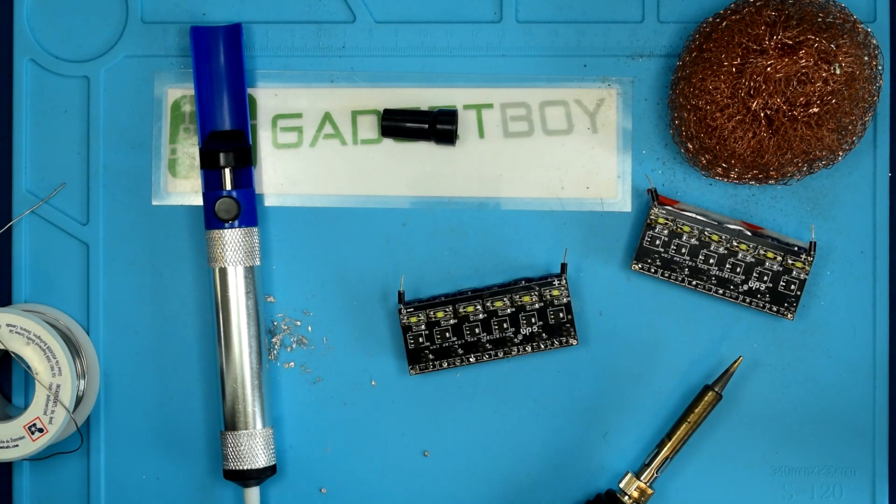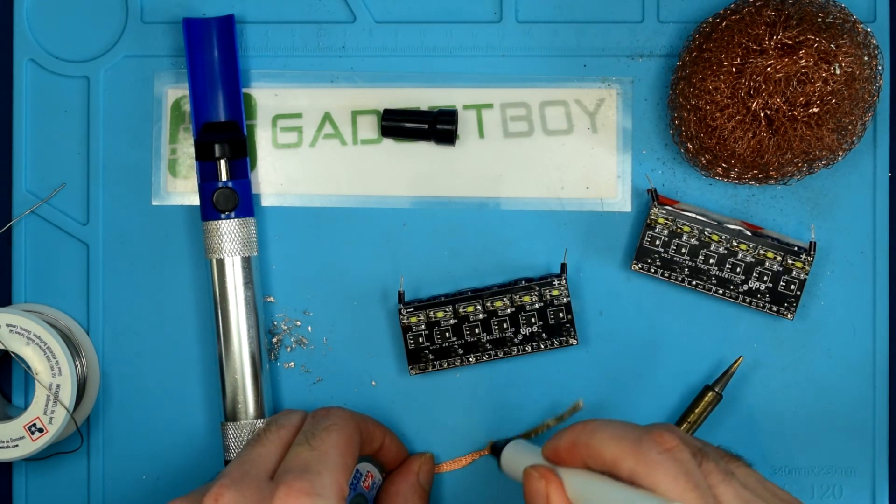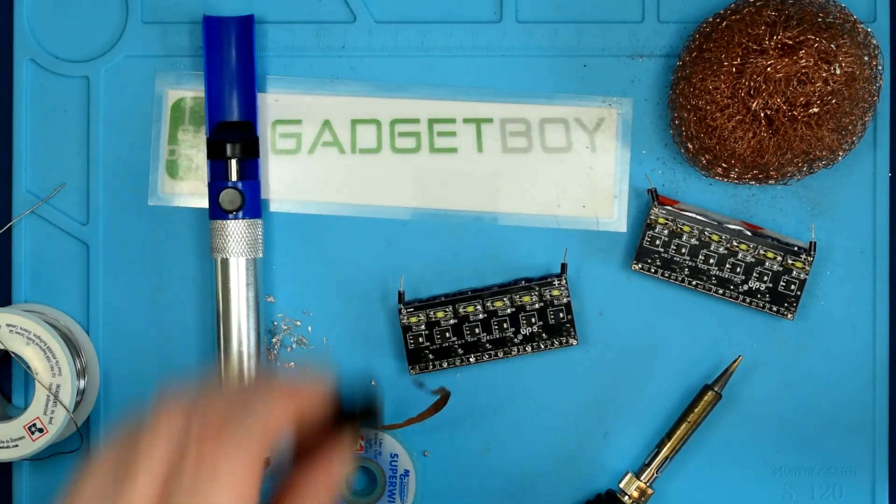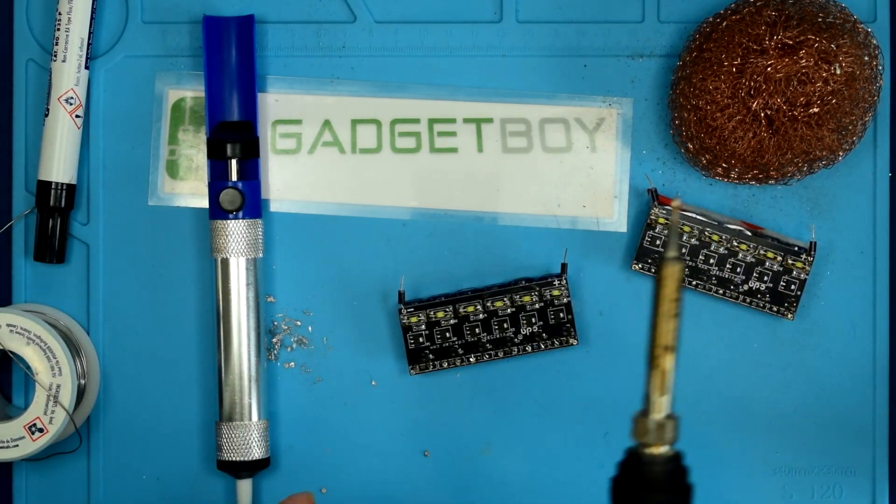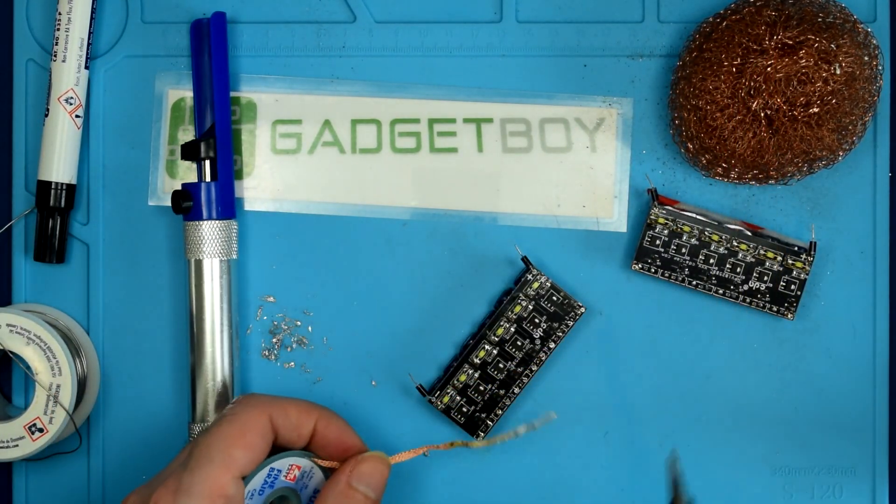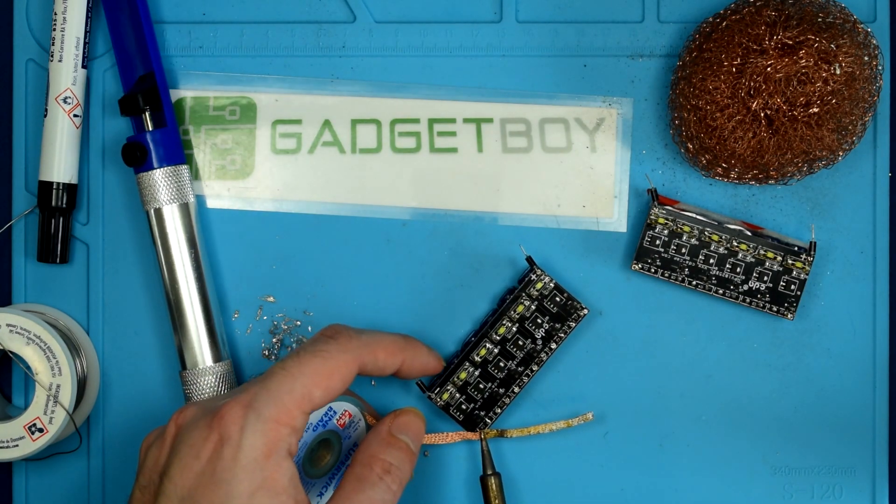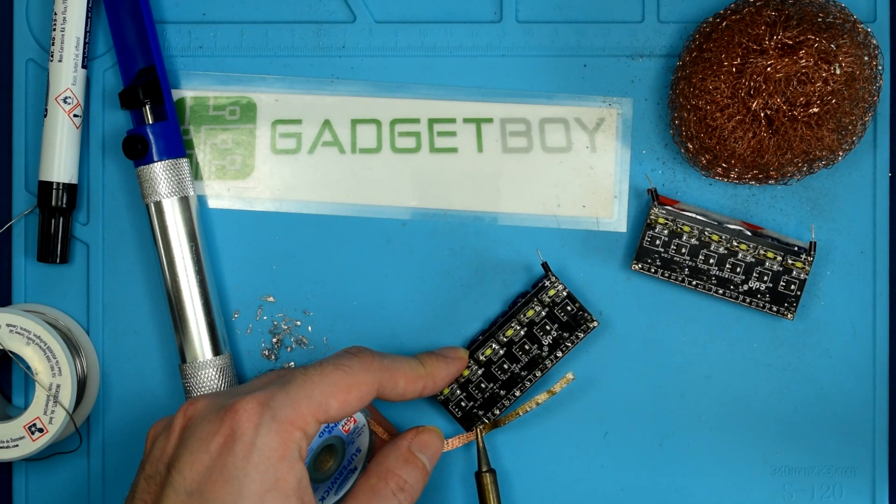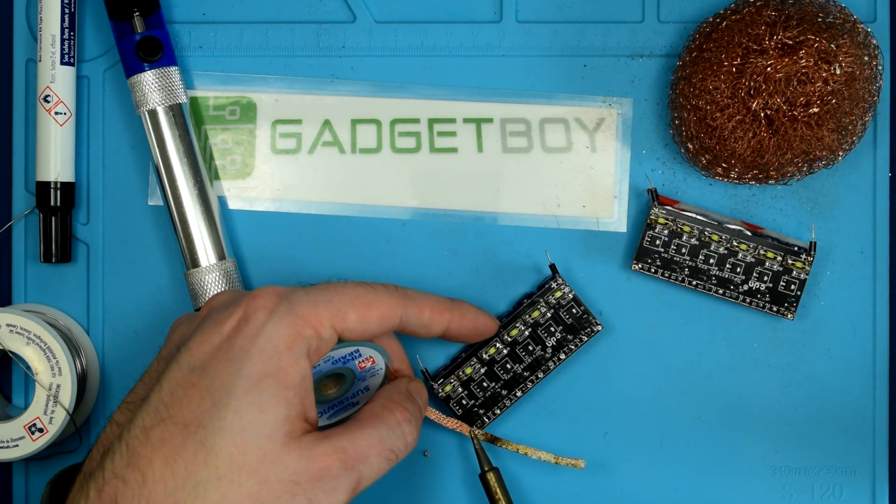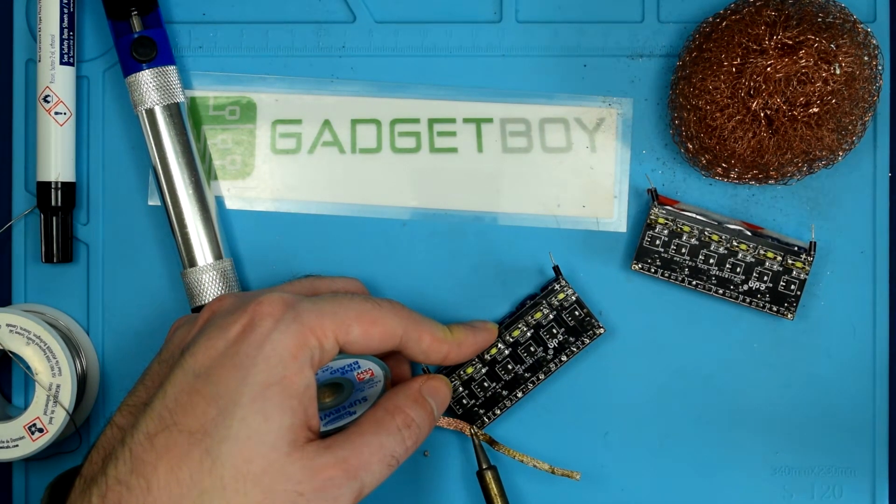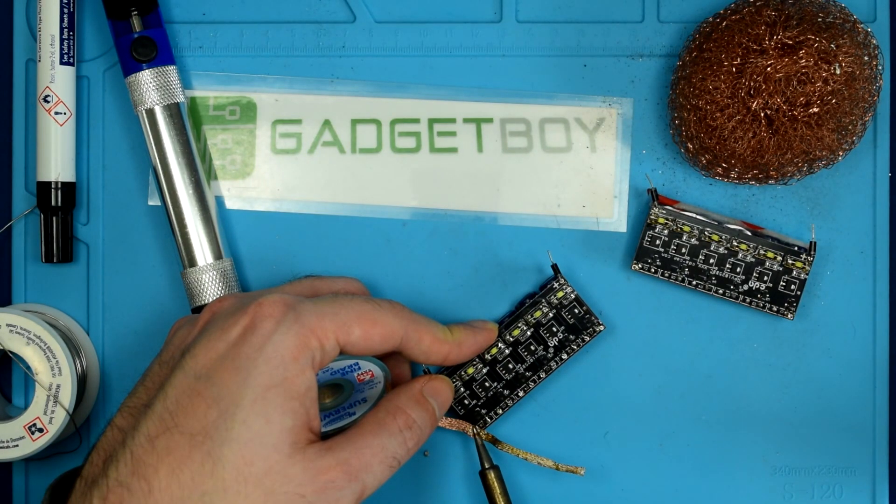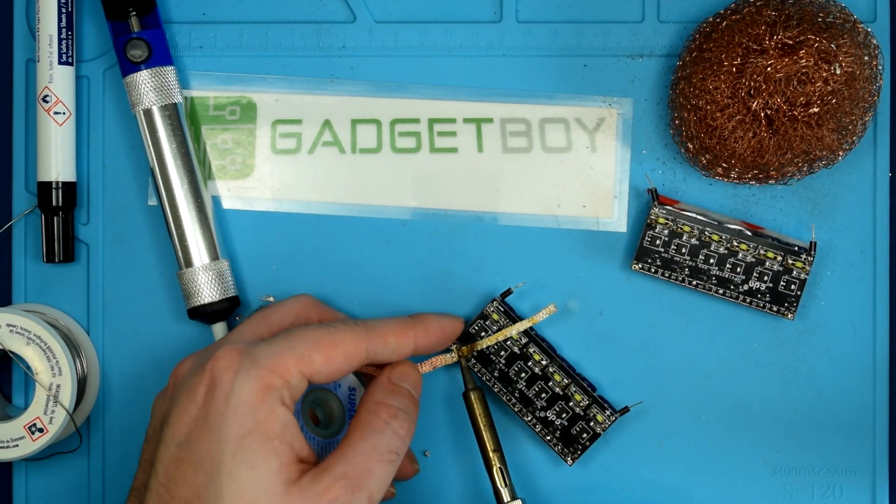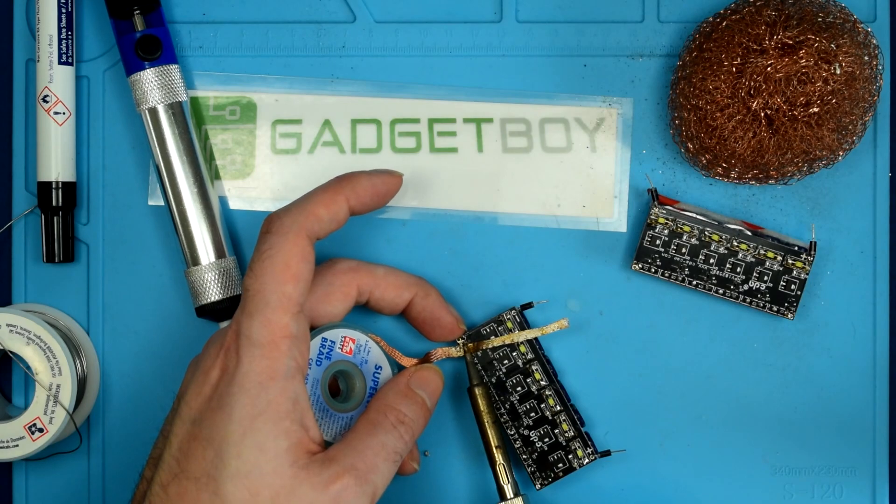We'll just dab a bunch of flux onto the joints. And we'll grab the braid, and we'll go ahead and get some flux on it as well. A good solder braid has flux powder impregnated into it, but liquid flux is always superior. And then we'll just try to remove the remaining solder from these joints. This might be a little bit more challenging than I originally thought.